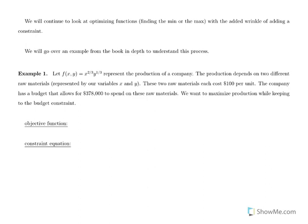Let's set up this example. We have a function of two variables: X to the two-thirds times Y to the one-third. This is going to represent production of a company. Production is being measured in some unit, and it depends on two different raw materials represented by X and Y. X is the amount of the first raw material, Y is the amount of the second raw material. These two raw materials each cost $100 per unit.